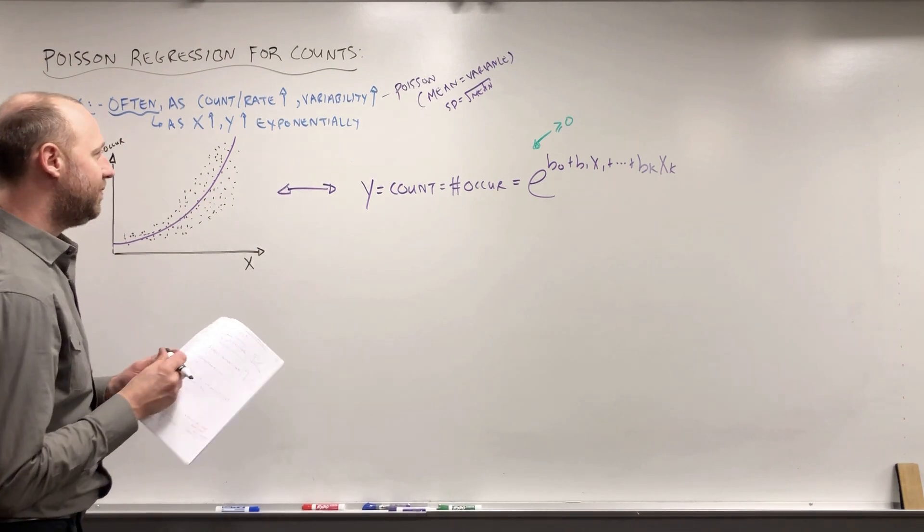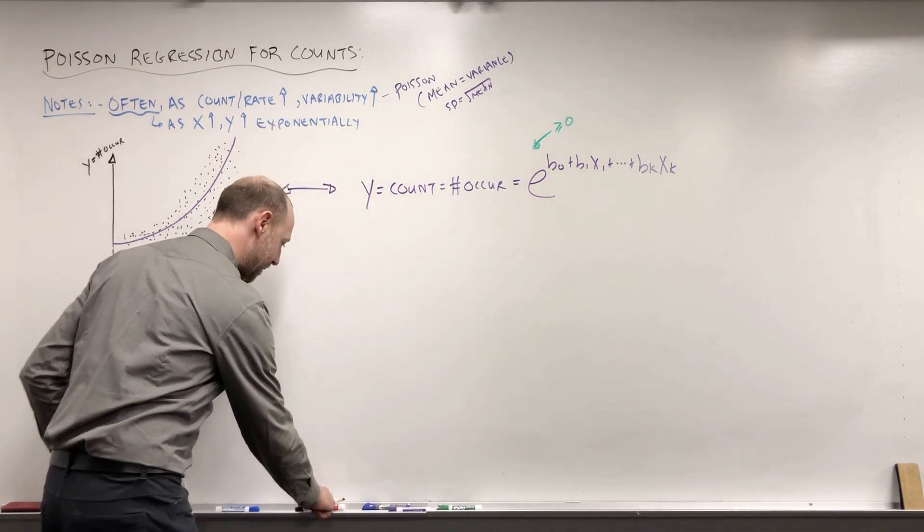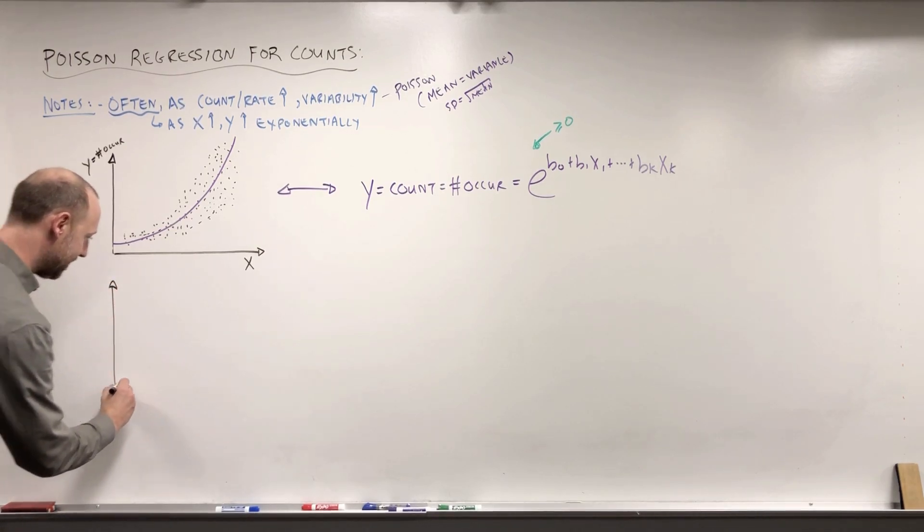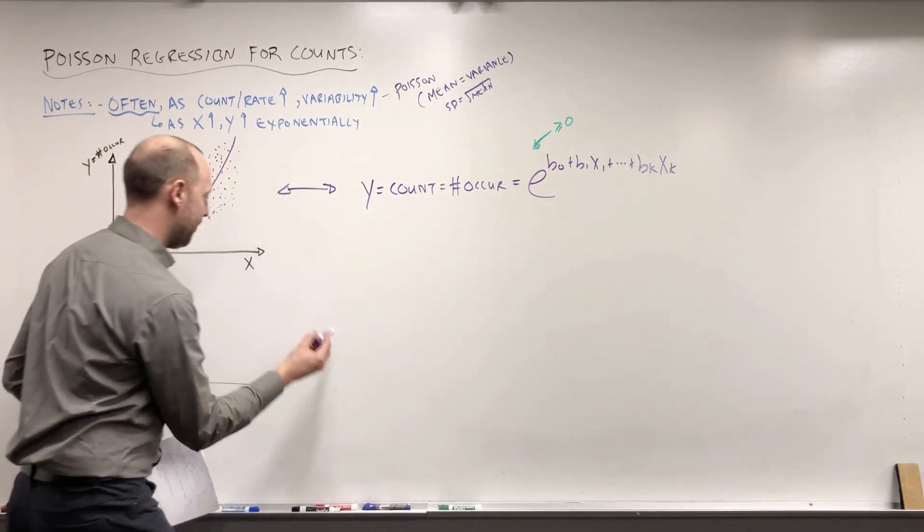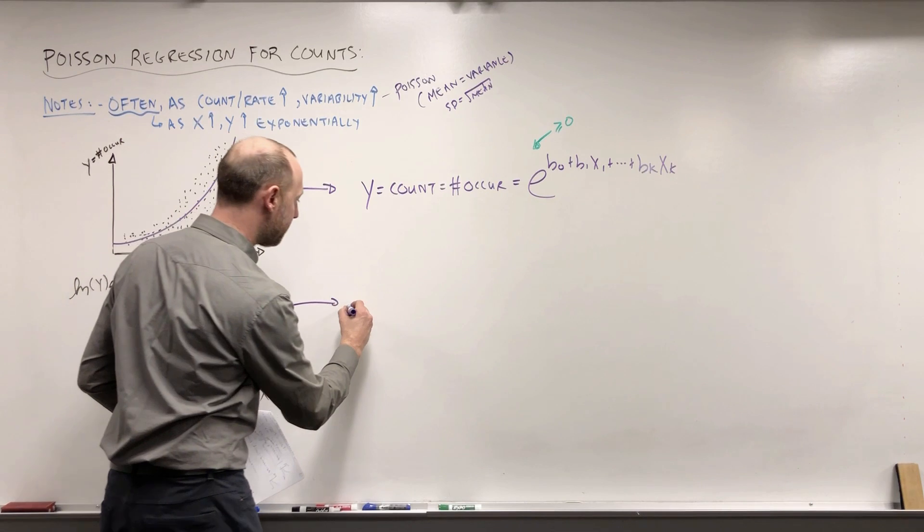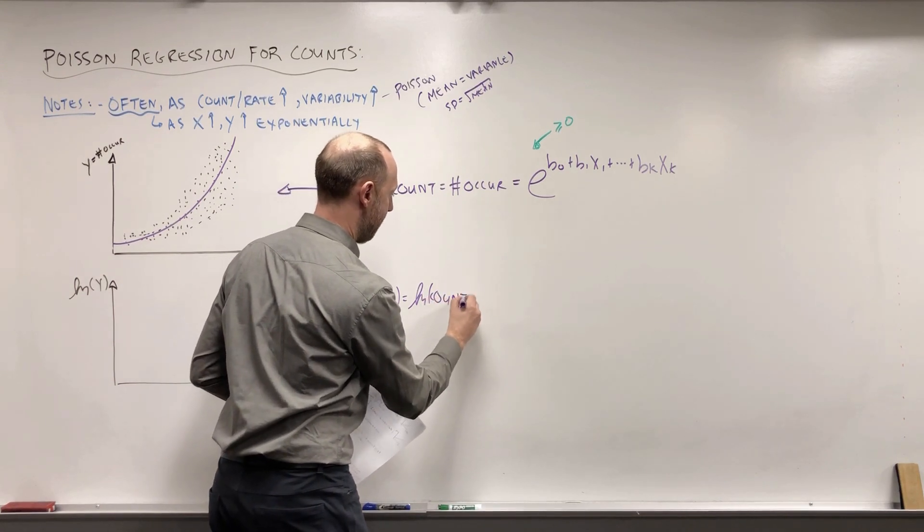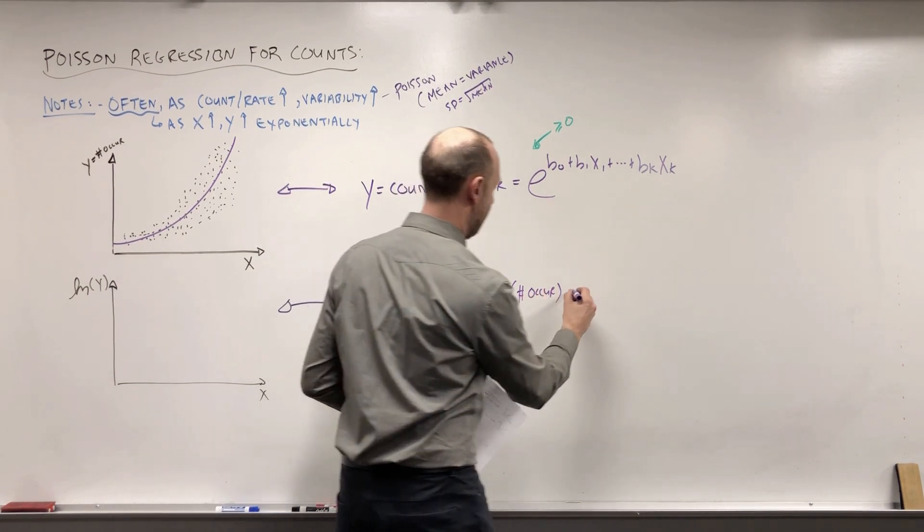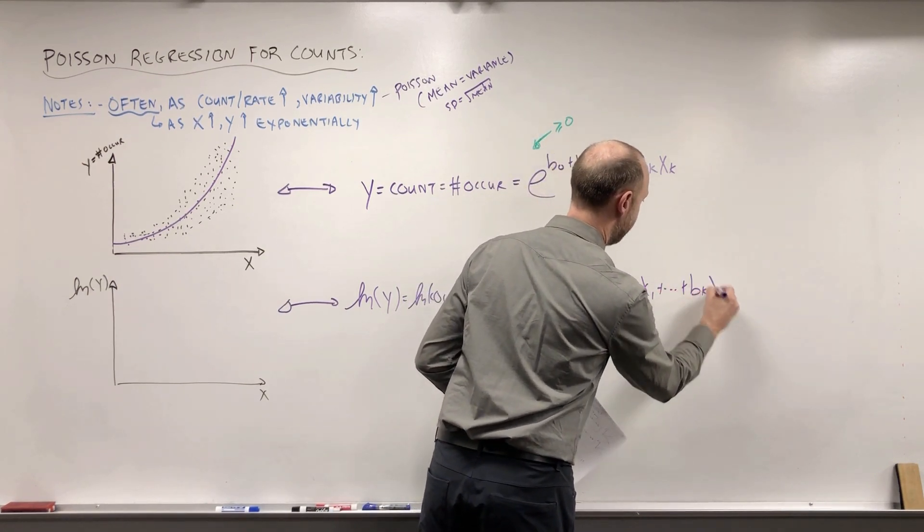And now what I want to think about is, what can we do to try and get this to be linear? Maybe I'll draw the plot first and then I'll write the model. You can probably see where I'm going to be going with this. But here's x. What if we take the log of y, the log number of occurrences? So maybe let me write that over here before I draw in the plot. If we take the log of y, or the log count of the log number of occurrences, that's going to be b0 plus b1 x1 all the way up to bk xk.